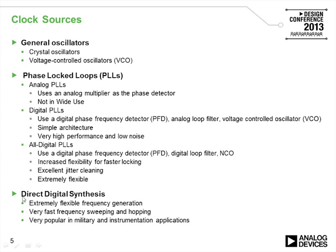An alternative method for generating clocks is direct digital synthesis, or DDS, which is very popular in military and instrumentation applications. You can generate very high quality sine waves and square waves. It works on the principle of a lookup table in the digital domain and an accumulator hopping through the lookup table, picking off points on a sine wave. That value is then converted into the analog domain by a high speed D-to-A converter, and a comparator after the sine wave generation squares it up into a regular clock source.